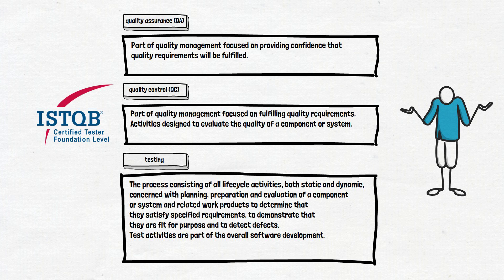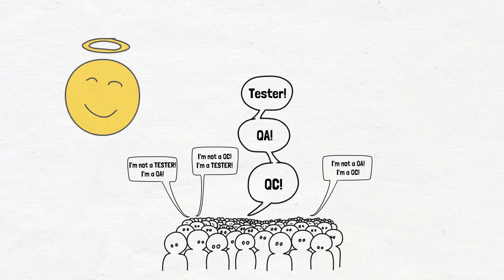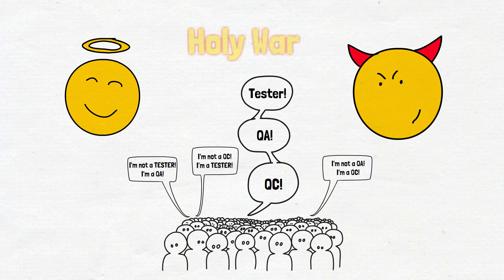So we decided to Google the answer to this question. But you already know what we can find on the internet if official resources don't answer questions clearly. That's right — there is a holy war going on. This means you can say whatever you want and nobody will be able to prove that you're wrong. All you need to do is find a camp to join. The safest and easiest way to survive in this holy war is to join the biggest and strongest camp.